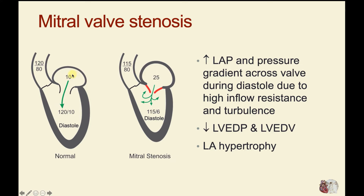Normally, when the left ventricle fills with blood from the left atrium during diastole, the pressure gradient across the mitral valve is very negligible. A normal left atrial pressure might be 10, and the end diastolic pressure in the left ventricle might also be 10.